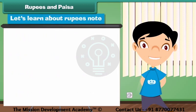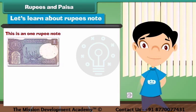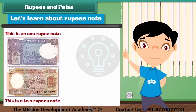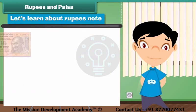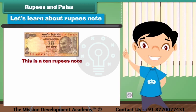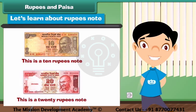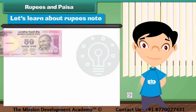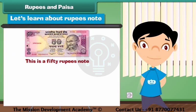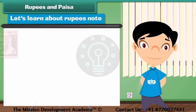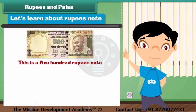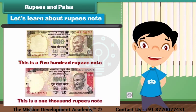Let's learn about rupee notes. This is a 1 rupee note. This is a 2 rupees note. This is a 5 rupees note. This is a 10 rupees note. This is a 50 rupees note. This is a 100 rupees note. This is a 500 rupees note. And this is a 1,000 rupees note.